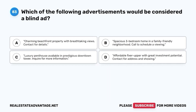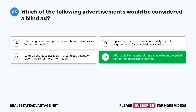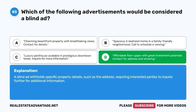Question 83. Which of the following advertisements would be considered a blind ad? A. 'Charming beachfront property with breathtaking views — contact for details.' B. 'Spacious three-bedroom home in a family-friendly neighborhood — call to schedule a viewing.' C. 'Luxury penthouse available in prestigious downtown tower — inquire for more information.' D. 'Affordable fixer-upper with great investment potential — contact for address and showing.' The correct answer is D. A blind ad withholds specific property details such as the address, requiring interested parties to inquire further for additional information.